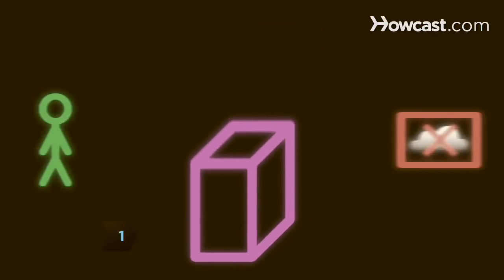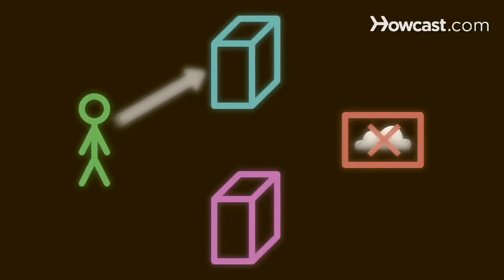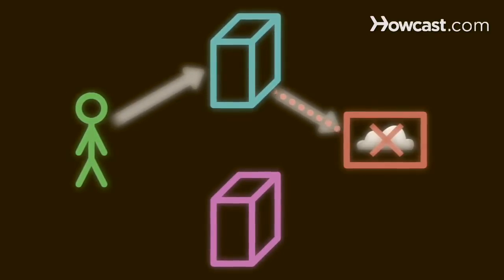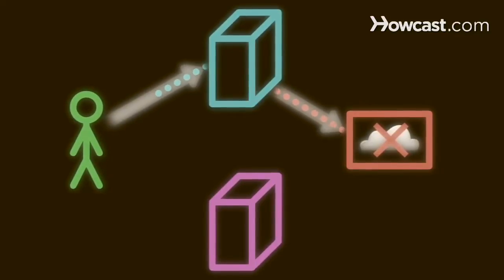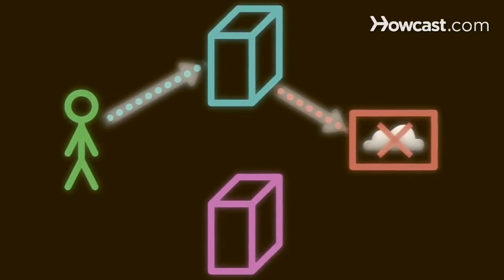Step 1: Get a grasp of the basic process. A content filtering proxy server controls access to web content. You can bypass these controls and view restricted pages by using circumvention technology, which creates an alternate path to your web destination. There are several types of circumvention methods, each with pros and cons.